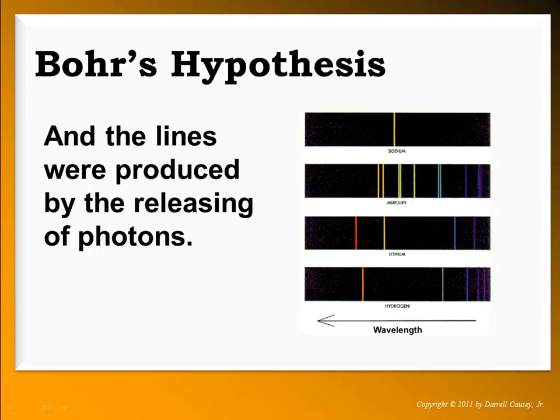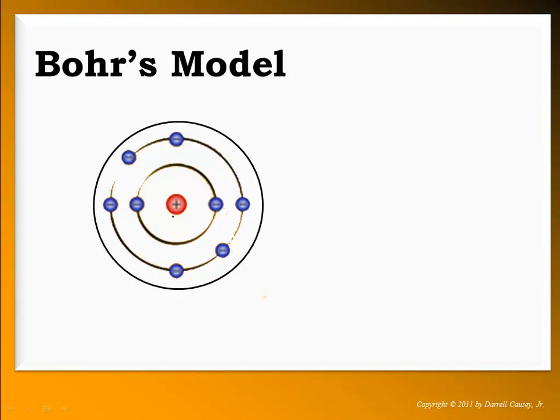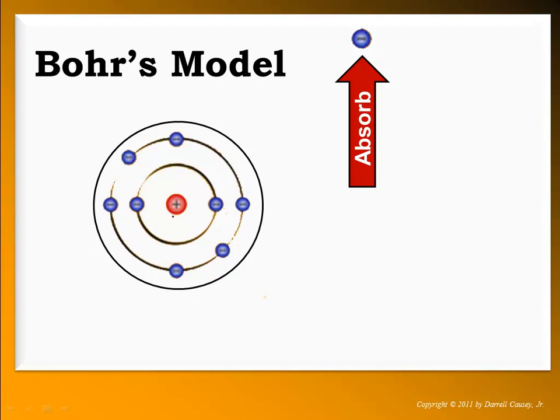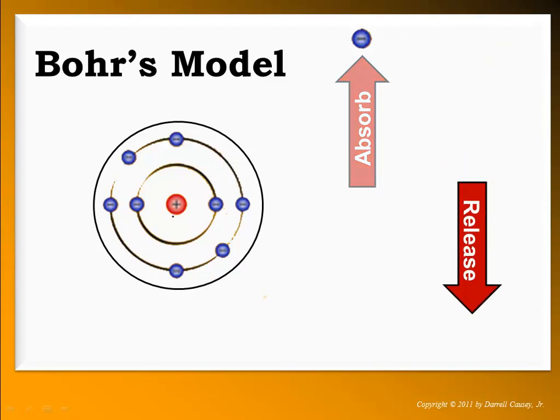When electrons are excited, they will jump from their ground state — their very lowest state — to an excited state, because they've absorbed photons. And of course, what goes up must come down, so they will come back down, releasing photons in quantized, discrete amounts. Watch my graphic: take an electron in its ground state, jump it up — it's absorbing photons, so it's gone to a higher energy level, the excited state. Then it releases and goes back down to the ground state. That's pretty much what Bohr was saying about the electrons.